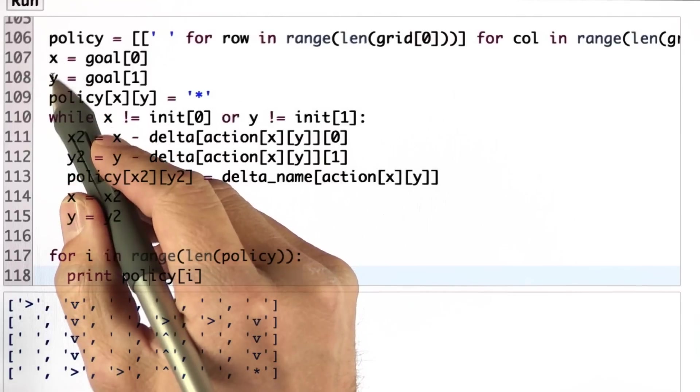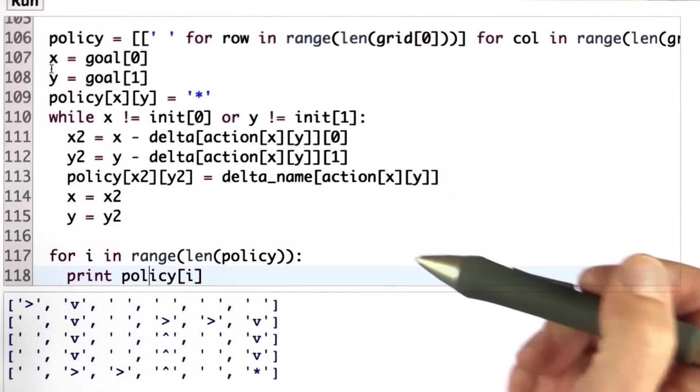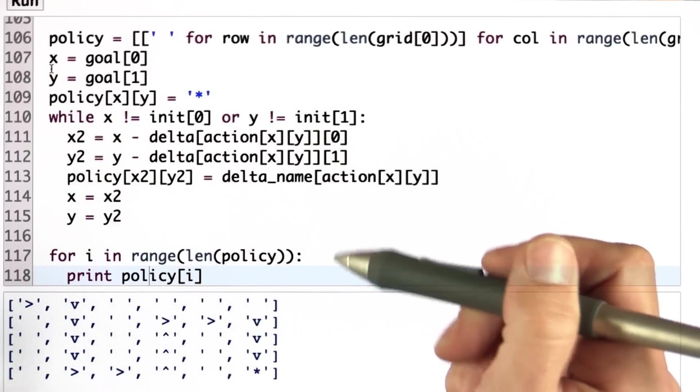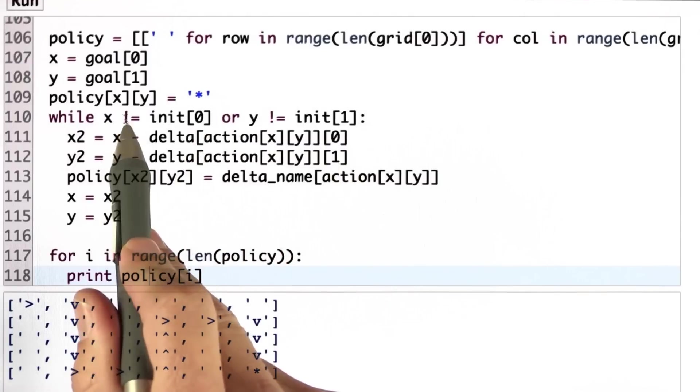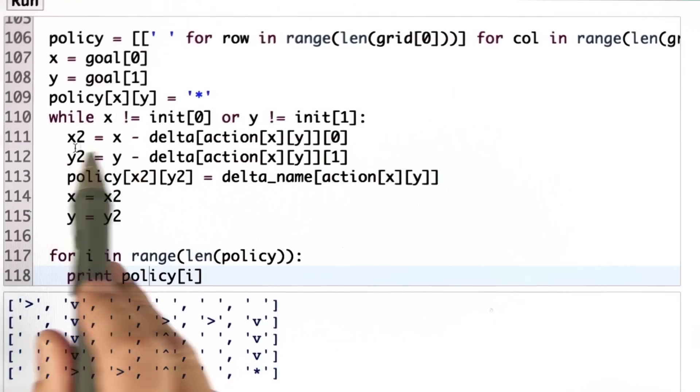I iterate from the goal location, x and y, now in backwards order all the way to the start. And do this as long as x and y haven't become my initial location yet. And I apply the inverse action.